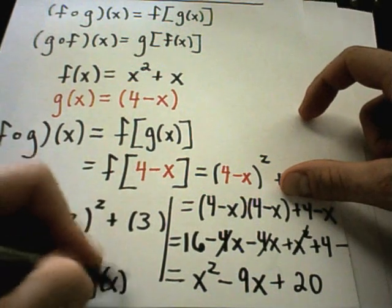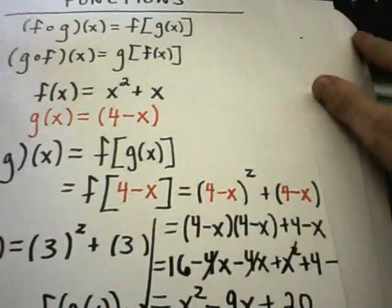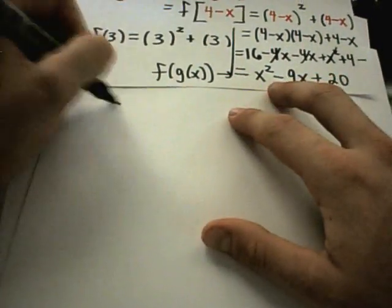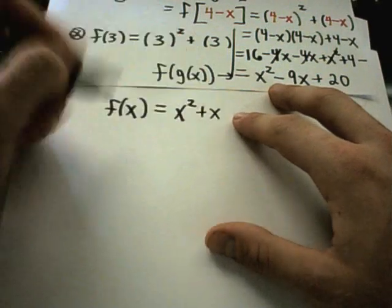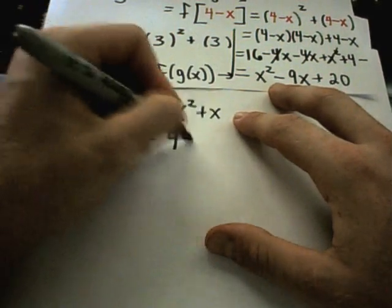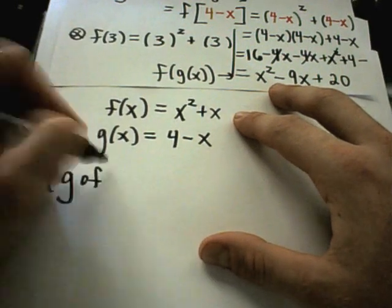Let's flip it around. I had f of x is x squared plus x, and g of x is 4 minus x. Suppose now I want to find g of f of x.